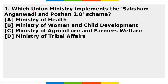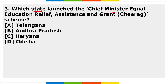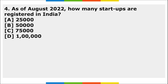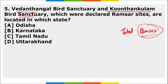Homework questions: First, which union ministry implemented the Saksham Anganwadi and POSHAN 2.0 scheme? Second, Nationally Determined Contribution (NDC), recently in the news, is related to which field? Third, which state launched the Chief Minister Equal Education Relief Assistance and Grant scheme? Fourth, as of August 2022, how many startups are registered in India? Fifth, Vedanthangal Bird Sanctuary and Koonthankulam Bird Sanctuary, declared Ramsar sites, are located in which state? Also, what is the total number of Ramsar sites in India after 10 new ones were recently added?